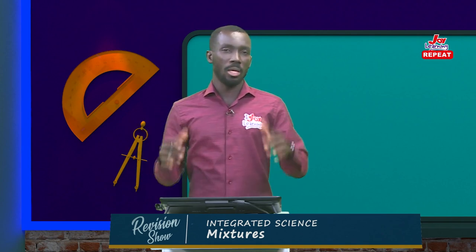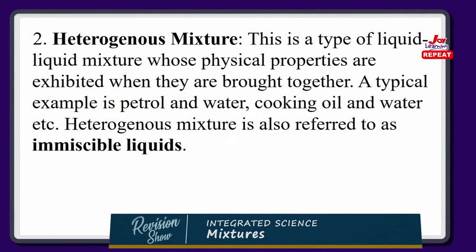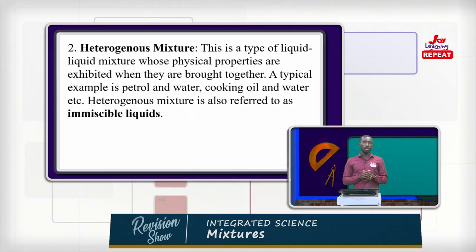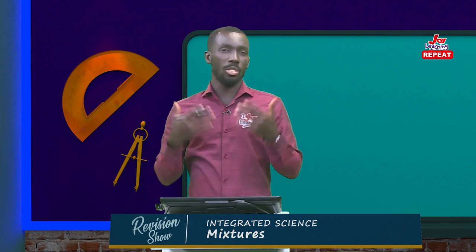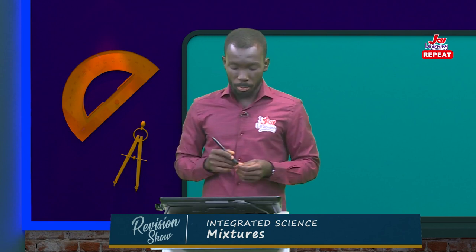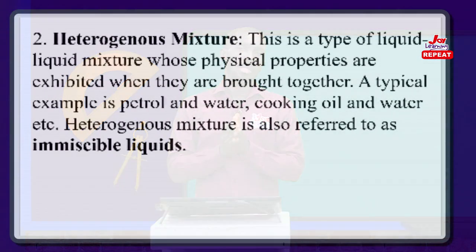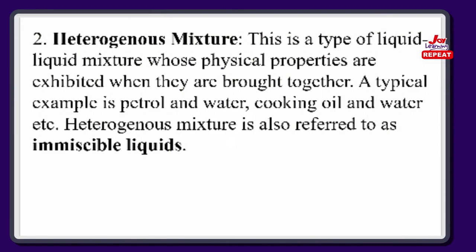Regardless of whichever liquid was poured into the container first, there will always be a clear distinction. An example is petrol and water — when mixed, petrol always comes on top because water is denser than petrol. Similarly, with water and cooking oil, if you leave it for a while, the cooking oil gradually moves to the surface on top of the water, because water is also denser than cooking oil. All these are called heterogeneous mixture, or immiscible liquids.